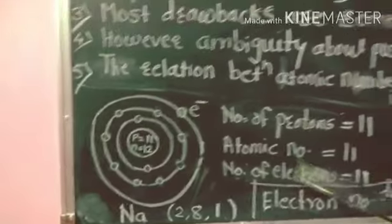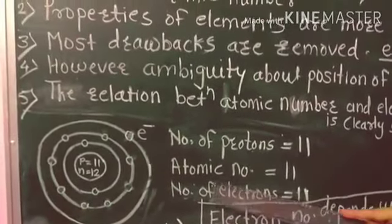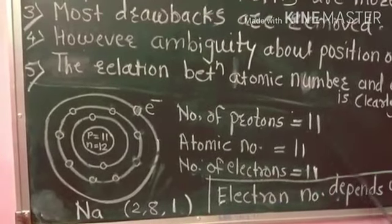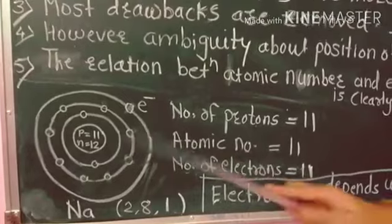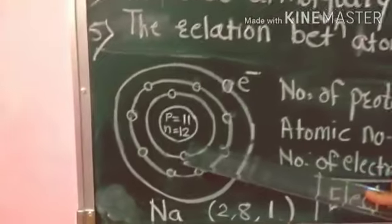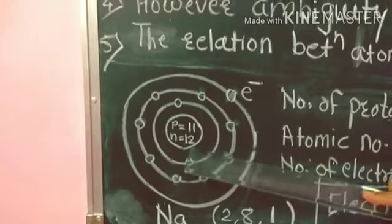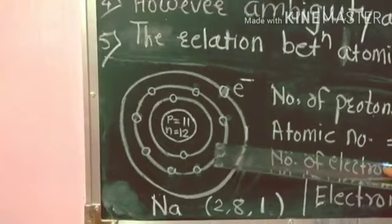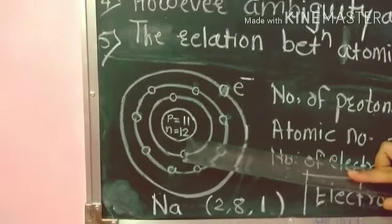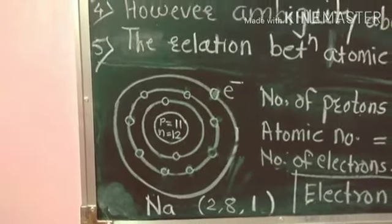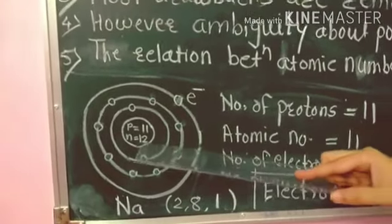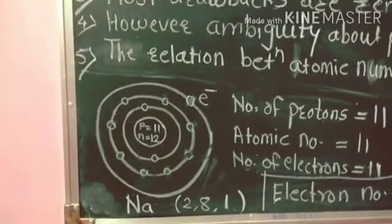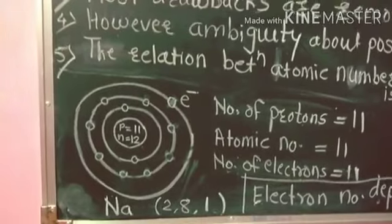The atomic number of sodium is 11. Why? Because there are 11 protons present in the nucleus of sodium. There are 11 protons and 12 neutrons. The mass number of sodium is 23.